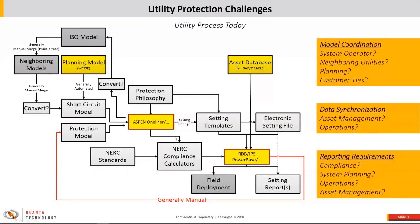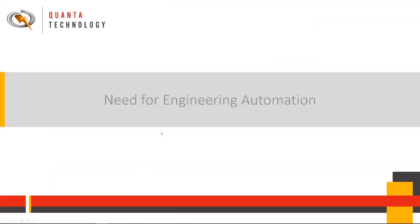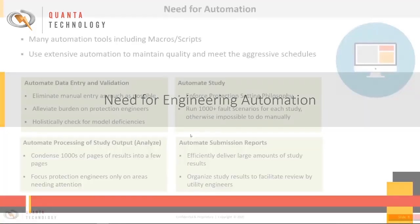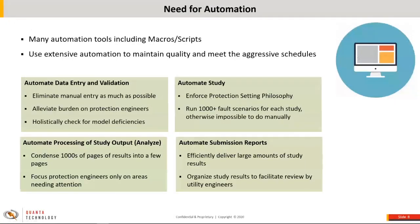This allows protection engineers to use their philosophies and setting templates to come up with setting changes and create electronic native setting files issued to the field through asset repositories. You'll also have NERC compliance challenges utilizing all these different data sources. Programs such as one-liner and Aspen RDB are really in the thick of all these activities that the protection engineer may do day-to-day, and therefore there's a great need for additional automation and API to reduce these efforts.